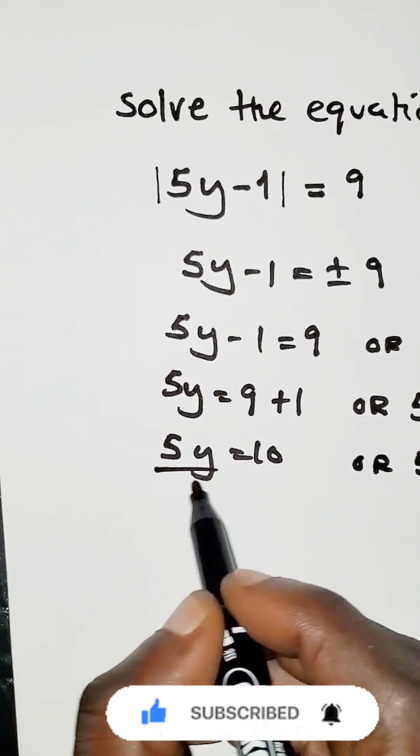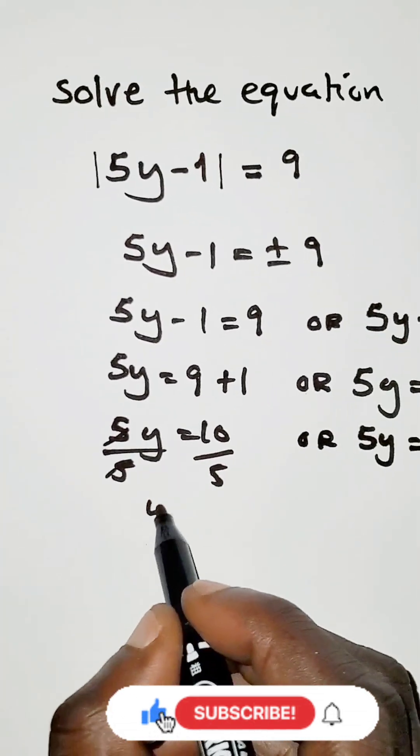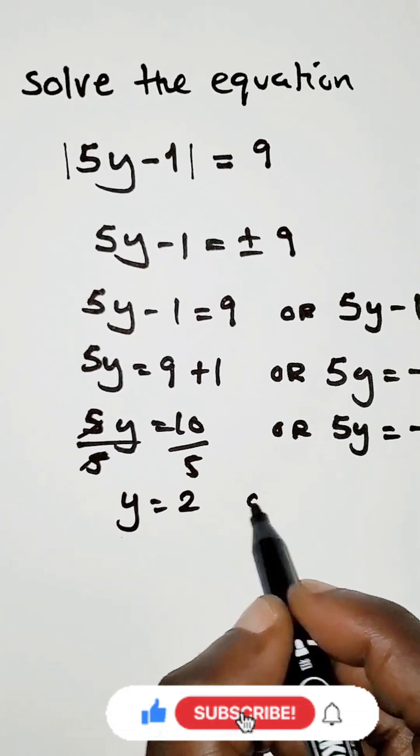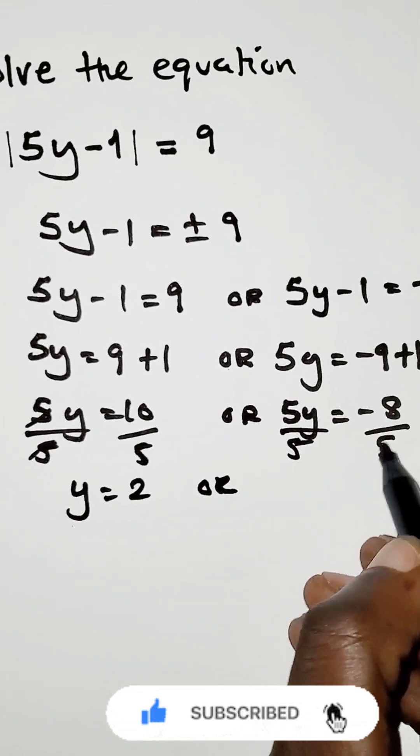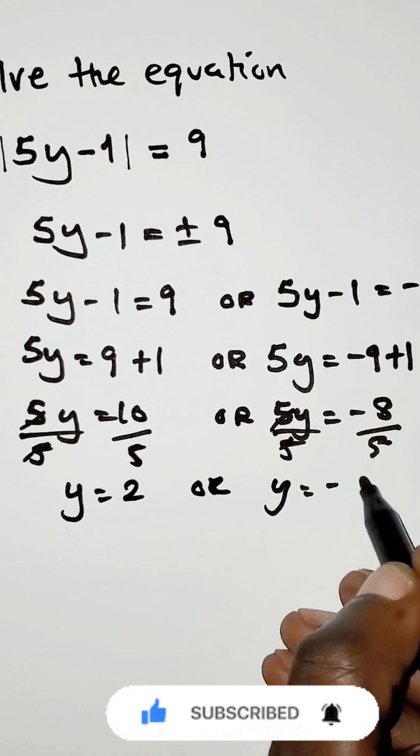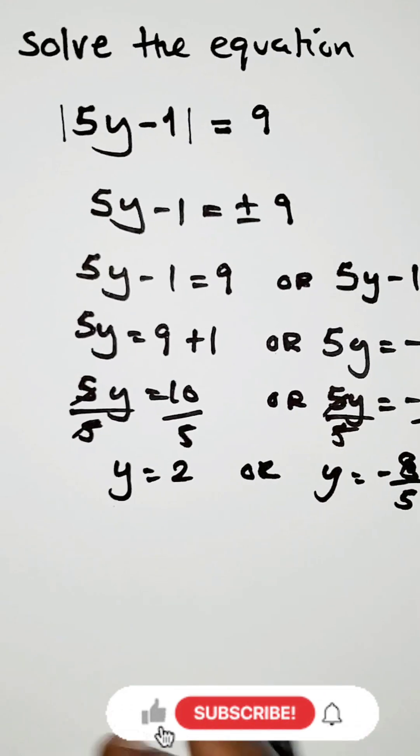We divide both sides by 5, even here by 5. Therefore, y is equals to 2, or when you divide by 5 both sides, y is equals to negative 8 over 5.